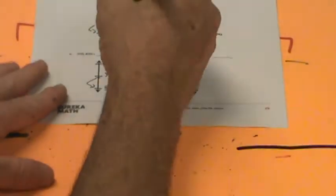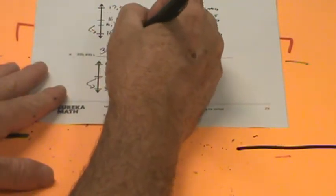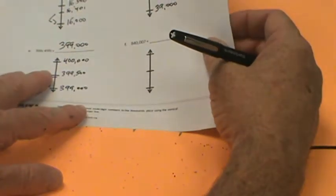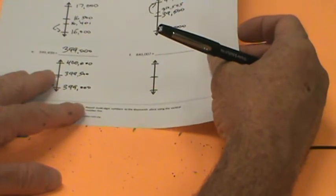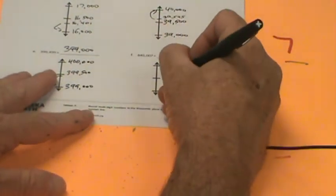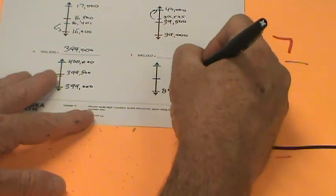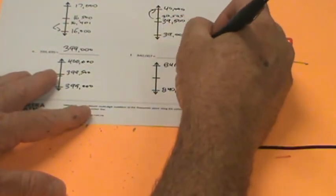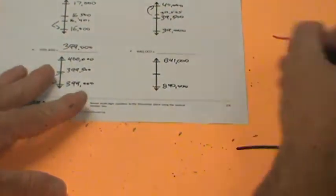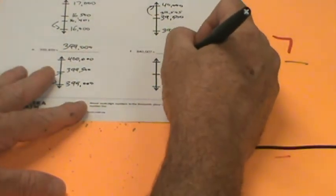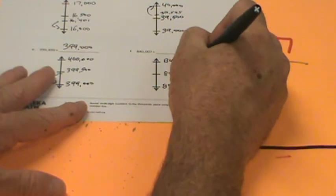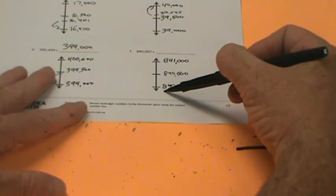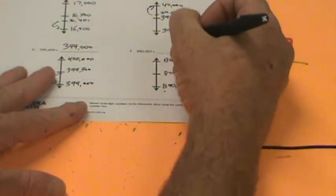Look over here to 840,007. I'm going to go 840,000 down here and 841,000 up top. What's my midpoint? 840,500. I'm at 840,007. That's almost 840,000, only seven more, so of course we're going to round down to 840,000.